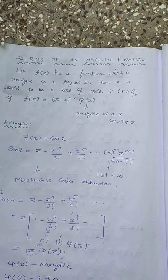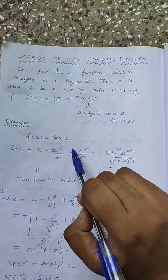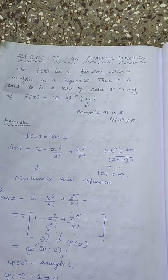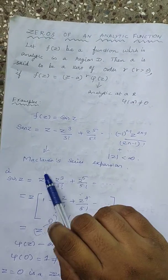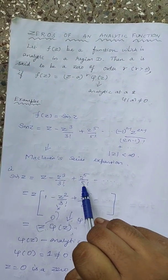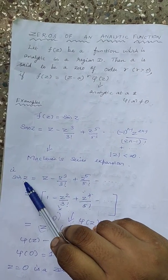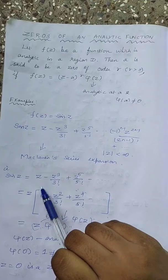Let us discuss with some examples. So the first example I am having is F of Z is equal to sine Z. So I used Maclaurin series expansion. I have written this: sine Z is equal to Z minus Z cube by 3 factorial plus Z power 5 by 5 factorial. This function is analytic in the entire complex region. I have taken Z outside. So I am getting this.